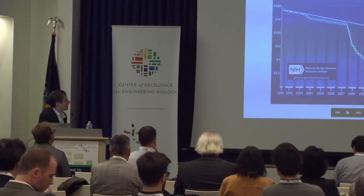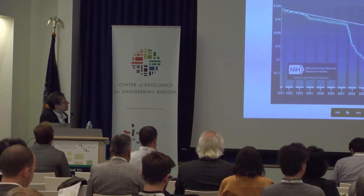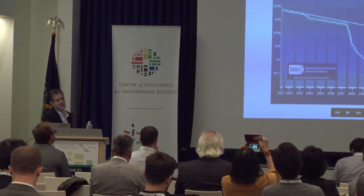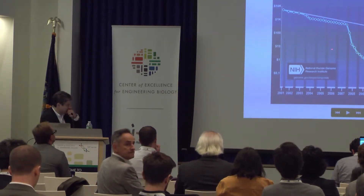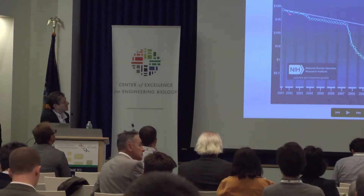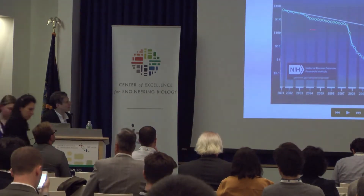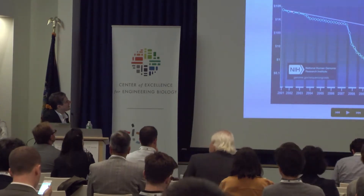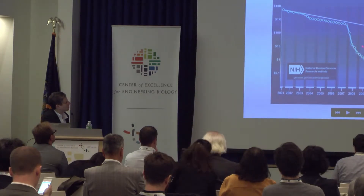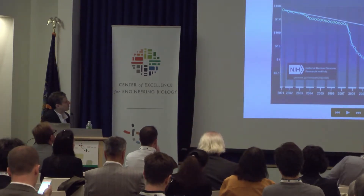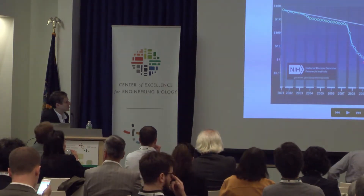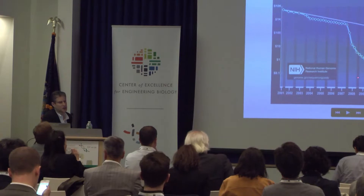This shows the scaling in sequencing data generation, which has been amazing. Until about 2007 to 2008, this was scaling exponentially — this is a straight line on a log graph — following the exponential scaling we've traditionally seen in the computer industry. Around 2007-2008, we had the amazing advent of next-generation sequencing, where sequencing became much cheaper and cheaper.